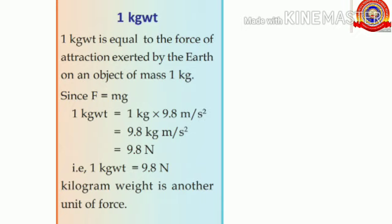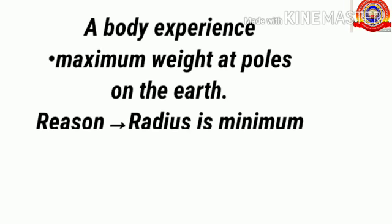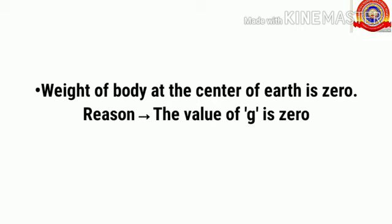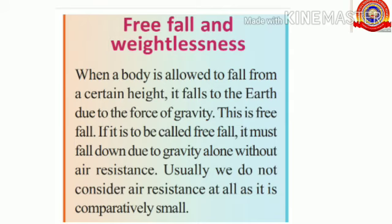The value of g on earth changes from place to place. A body experiences maximum weight at the poles, where the radius is minimum. At the equator, the radius is maximum, so the body experiences minimum weight. At the center of the earth, the weight of the body is zero, because the value of g — acceleration due to gravity — is zero.